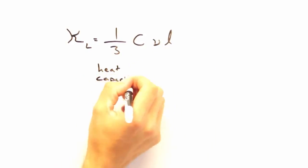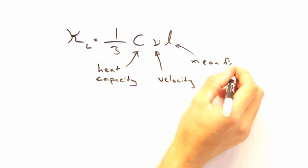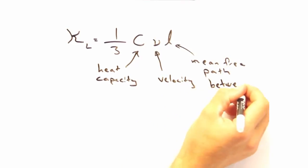Recall that last time we developed an expression for thermal conductivity as one-third CVL, where C is our heat capacity, V is the group velocity of our phonons, and L is the mean free path between collisions. We'll look at the temperature dependence of each of these, and then at the end, bring it all together.